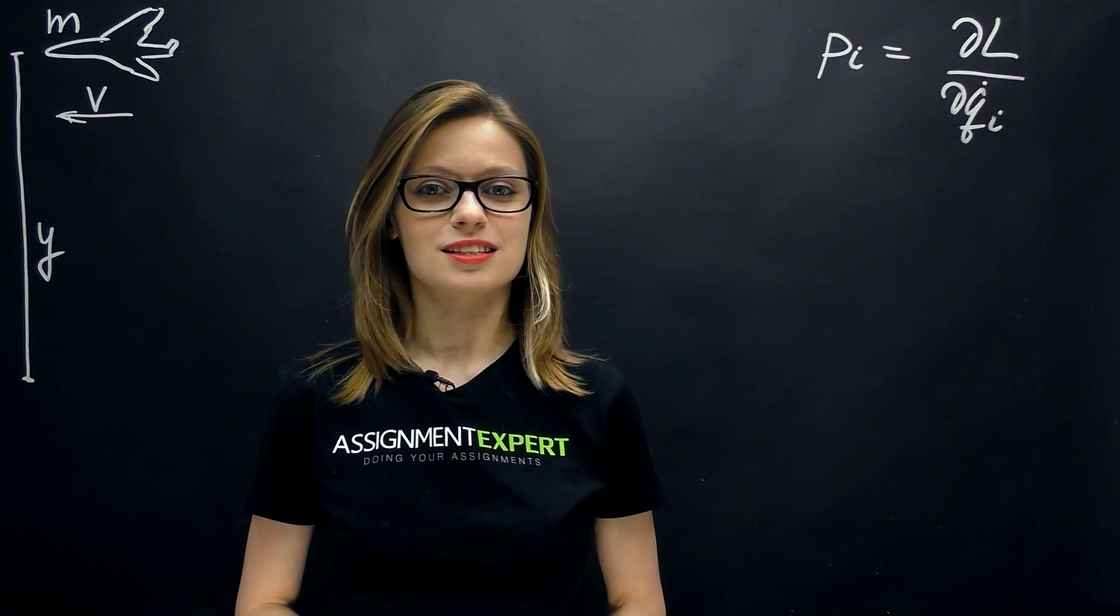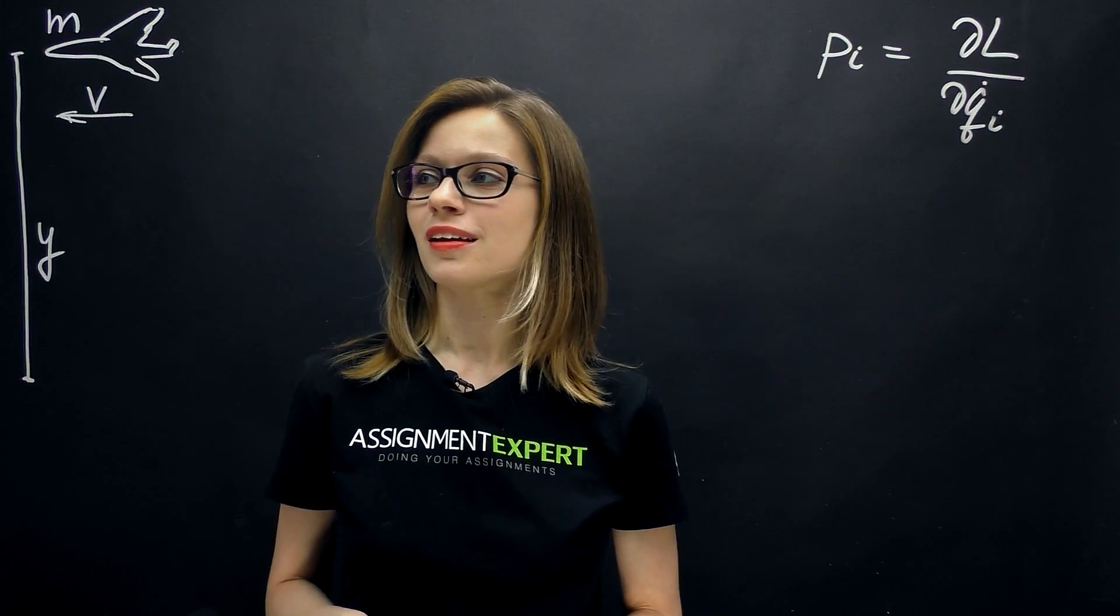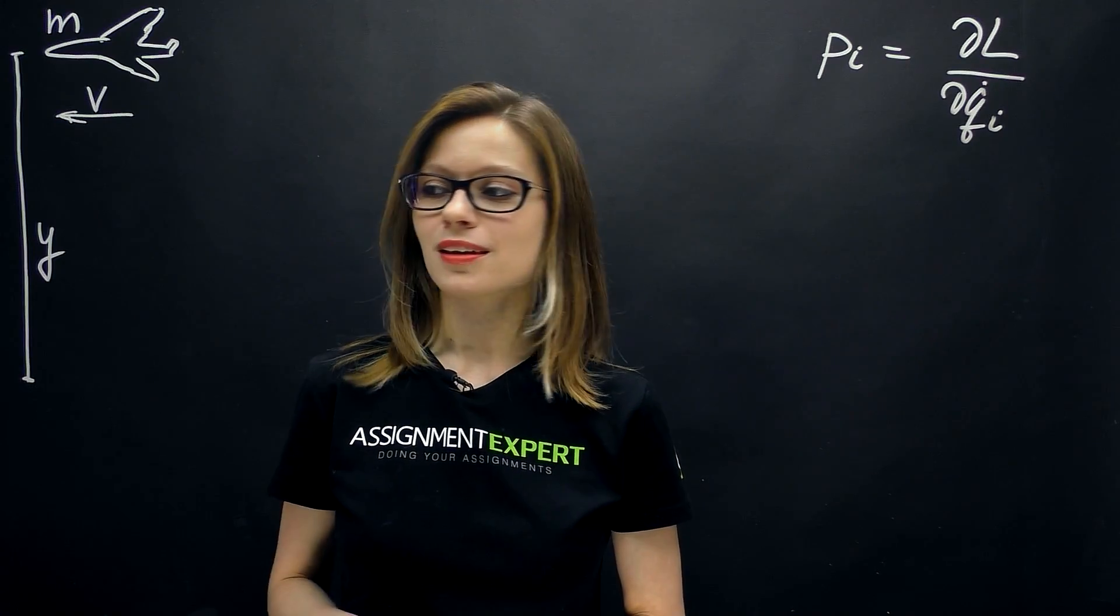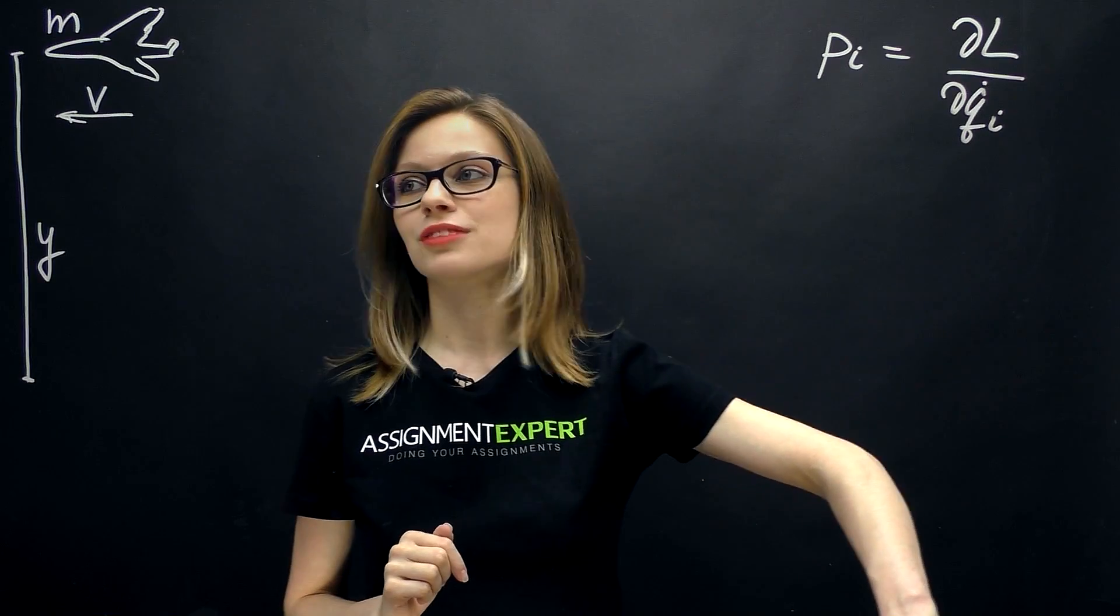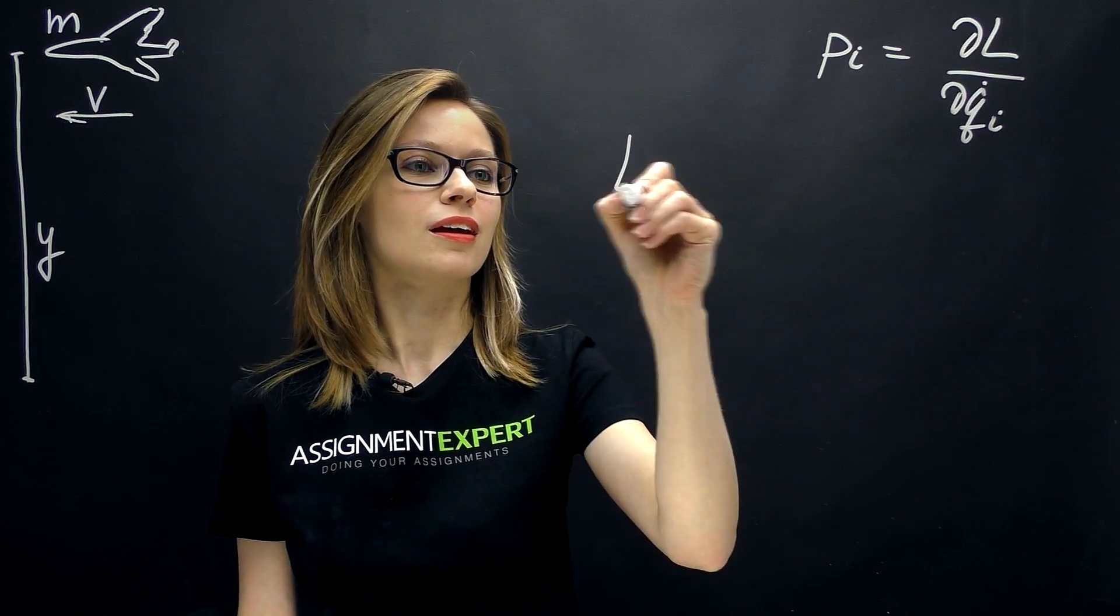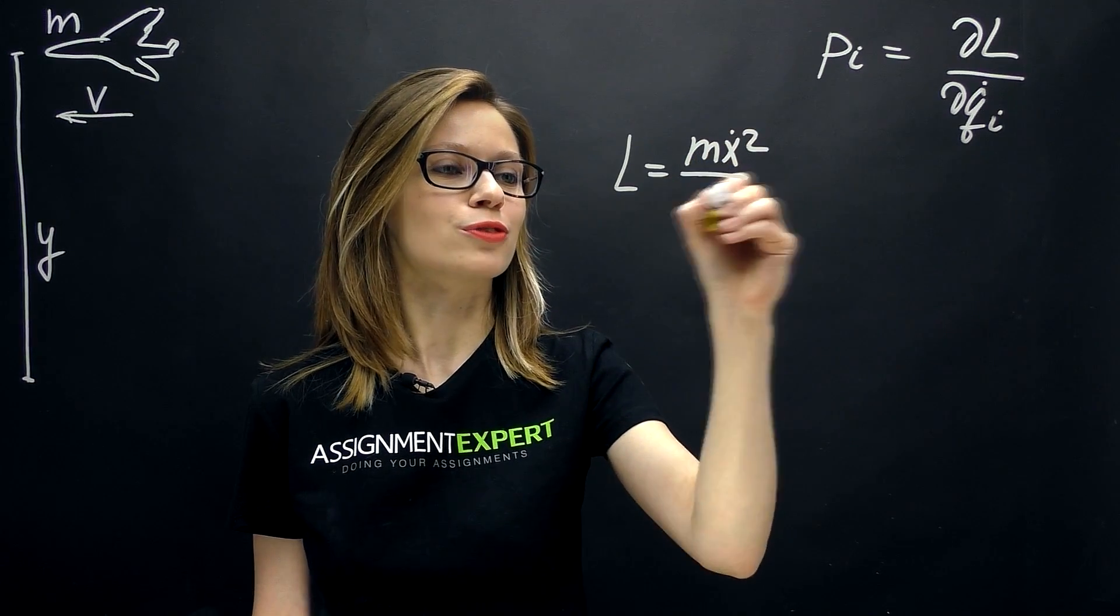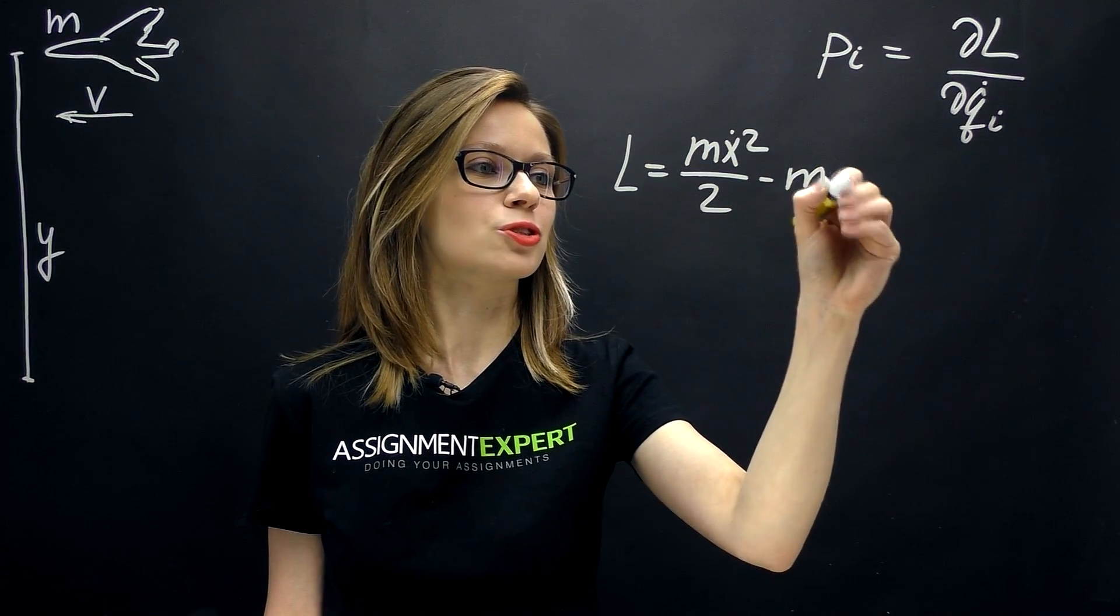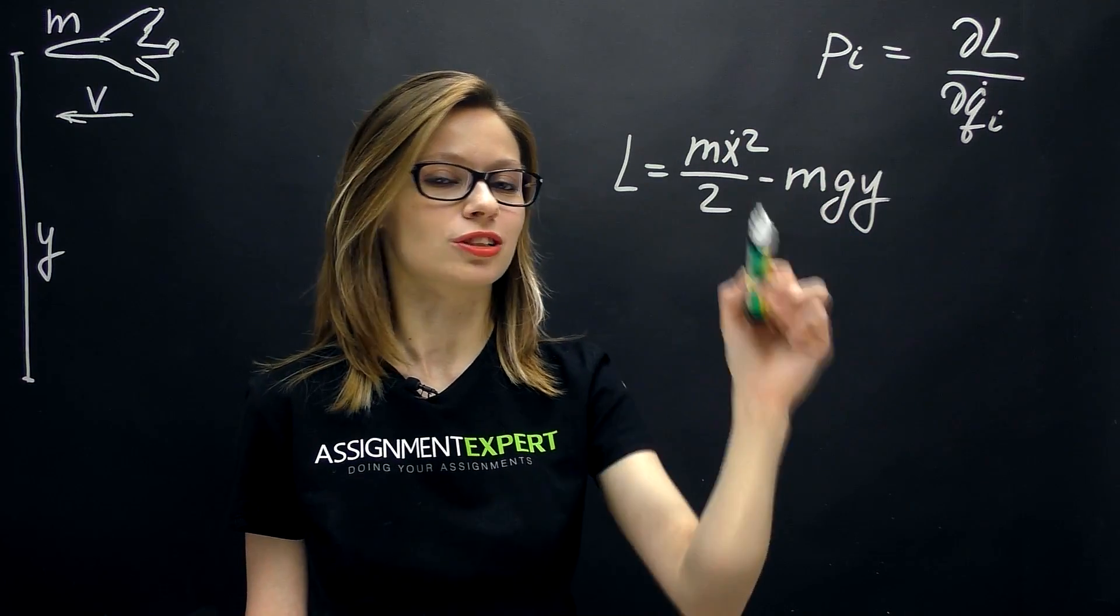Now let's consider an example. Suppose we have a plane of the mass m flying with a constant velocity at the fixed altitude y. The Lagrangian of this body will be the following: L equals m x dot squared over 2 minus m g y, the difference of kinetic and potential energies.